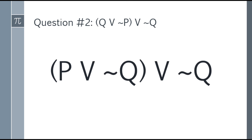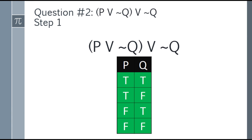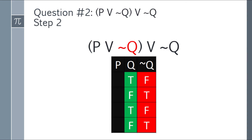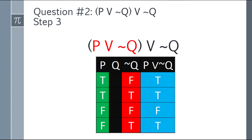Second question: the quantity (P OR ¬Q) OR ¬Q. Step one: set up the basic truth table. Step two: negate Q — gives false, true, false, true. Now solve inside the parentheses: P OR ¬Q using OR logic. First row: true. Second row: true. Third row: false (no true). Fourth row: true. So (P OR ¬Q) gives: true, true, false, true.